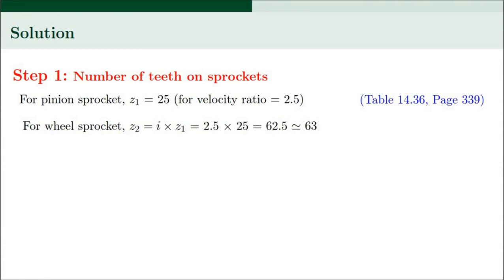In Step 1 we determine the number of teeth on sprockets. For the pinion sprocket, Z1 is taken as 25 — for a velocity ratio of 2.5, this value is obtained from table 14.36 on page 339. Using Z1 and i, the number of teeth on the wheel sprocket Z2 is 62.5, rounded to the integer 63. It is always better to select odd numbers of teeth to ensure uniform wear on sprockets.